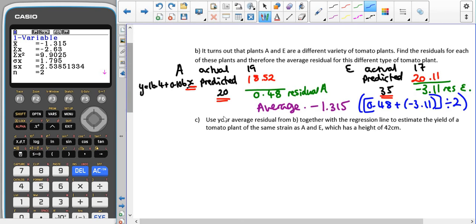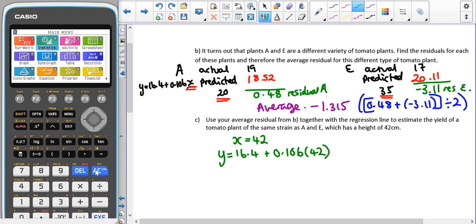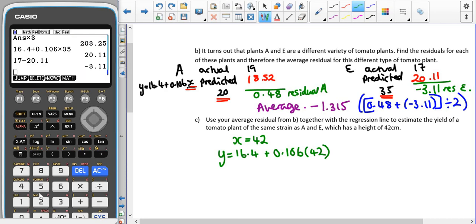Then we're going to use our average residual from b together with the regression line to estimate the yield of a tomato plant which is the same strain as A and E and has a height of 42 centimeters. This time we know our x value is 42. We're substituting that into our equation for the regression line, replacing our x with 42.